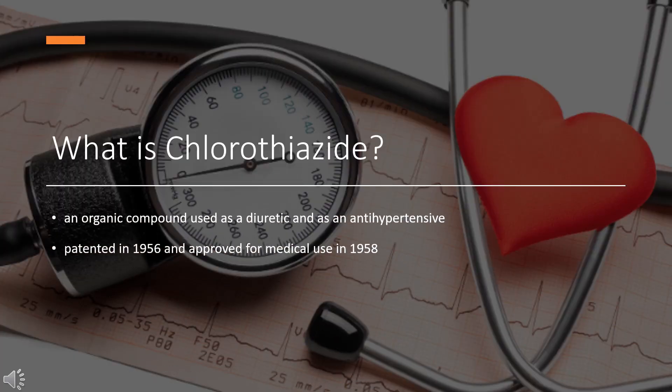What is chlorothiazide? Chlorothiazide, sold under the brand name Diuril among others, is an organic compound used as a diuretic and as an antihypertensive.